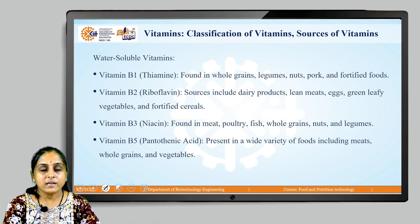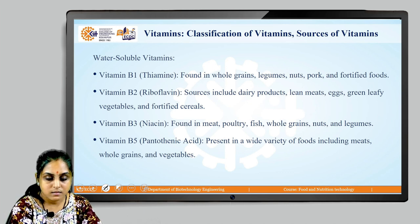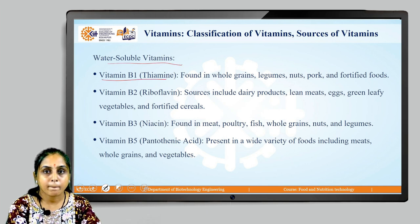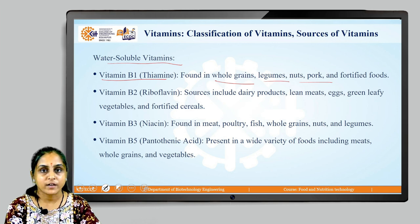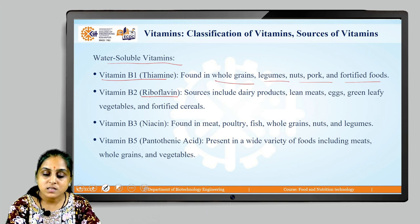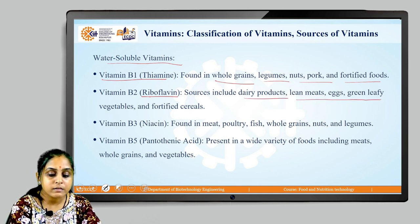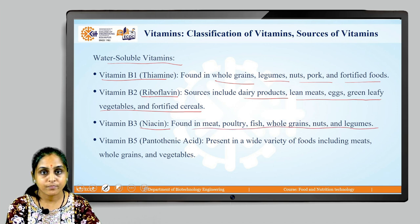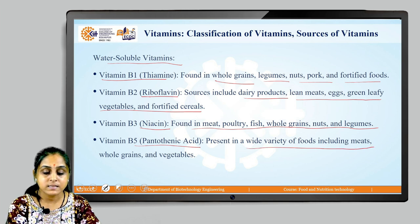Water-soluble vitamins include: Vitamin B1, known as thiamine, found in whole grains, legumes, nuts, pork, and fortified foods. Vitamin B2, known as riboflavin, with sources including dairy products, lean meats, eggs, green leafy vegetables, and fortified cereals. Vitamin B3, known as niacin, found in meat, poultry, fish, whole grains, nuts, and legumes. Vitamin B5, known as pantothenic acid, is present in a wide variety of foods including meats, whole grains, and vegetables.